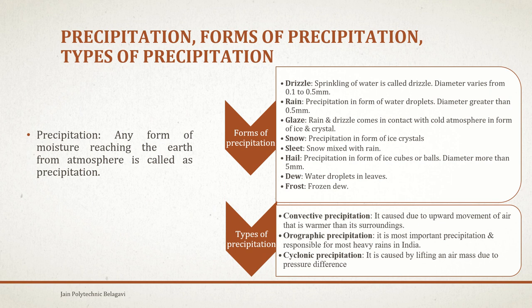The forms of precipitation are: drizzle, rain, glaze, snow, sleet, hail, dew, and frost. Drizzle is the sprinkling of water — just like sprinkling water for gardens, or the way a barber sprinkles water on hair before cutting. The diameter of the water droplet in drizzle varies between 0.1 mm to 0.5 mm.